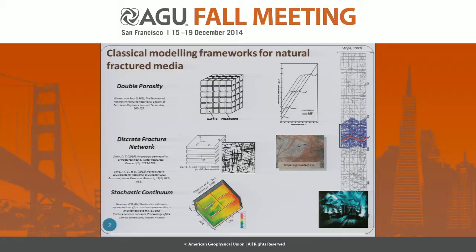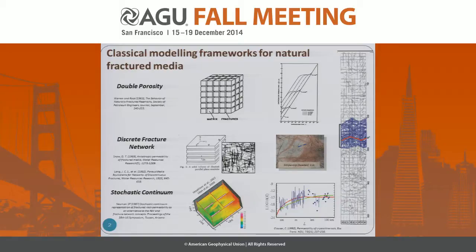The last one, the stochastic continuum approach, is efficient because it is a parsimonious approach with very few parameters. The large body of knowledge in stochastic continuum approaches allows us to find virtually all kinds of permeability upscaling, like the permeability synthesis of crystalline rocks stated by Clauser.